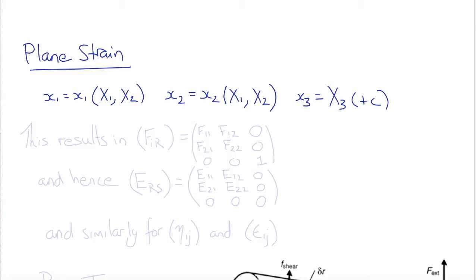Similarly, little x2 are only functions of big X1 and big X2, and little x3 is equal to big X3, or optionally plus a constant, which would just be a rigid body translation in the three-direction. So this would result in a deformation gradient tensor F with components F11, F12, 0, F21, F22, 0, and then 0, 0, 1.